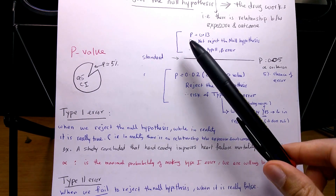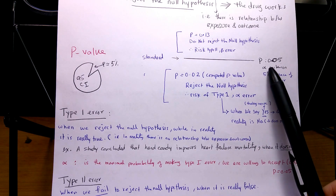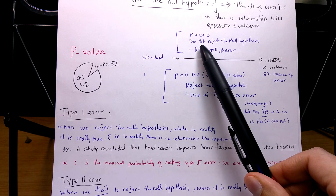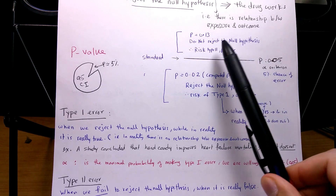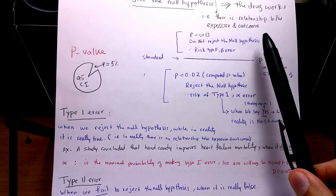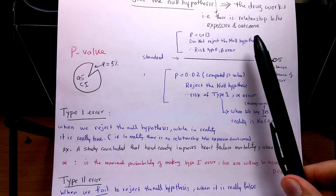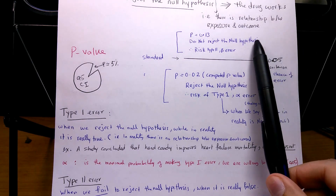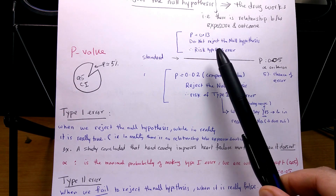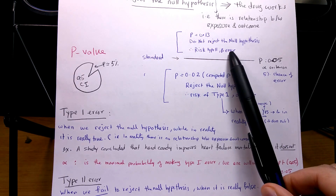On the other hand, if the p-value is higher than 0.05, say 0.13, we cannot reject the null hypothesis — meaning we conclude there is no relationship or the drug does not work. In this case we risk committing type 2 or beta error: the drug is actually working, but we concluded that it doesn't.